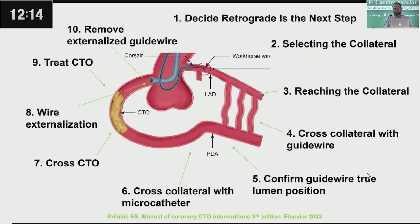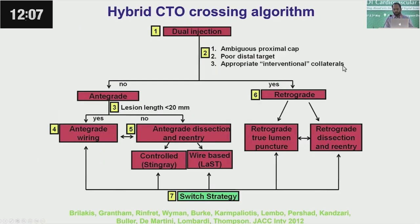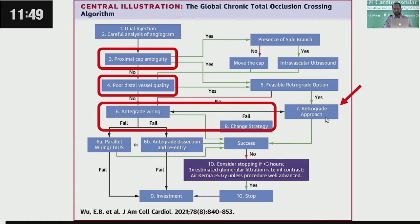What you need to do is select the collateral and then decide about which steps to go through. One has to decide about whether to go anterograde. The default in all my retrograde cases is also to try an anterograde approach for a short period of time and then move to retrograde, because even in a retrograde case you need to prepare your anterograde. There is an anterograde preparation that is still needed even if you're going retrograde.